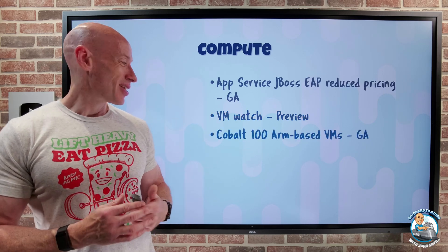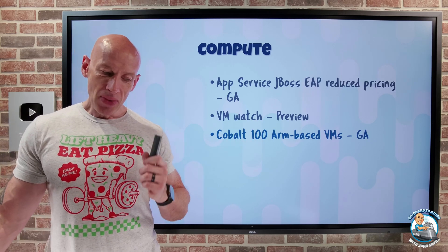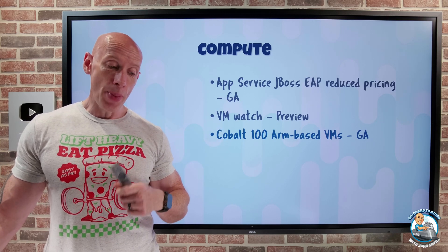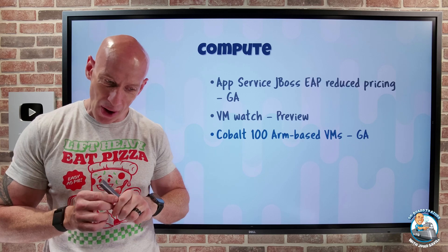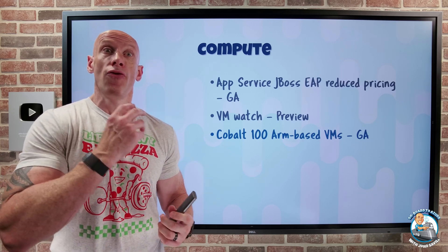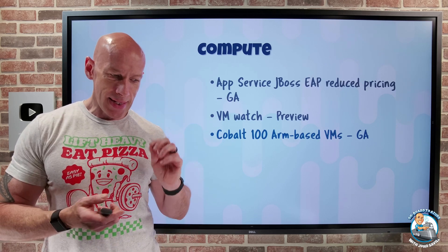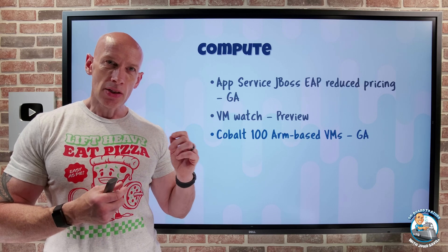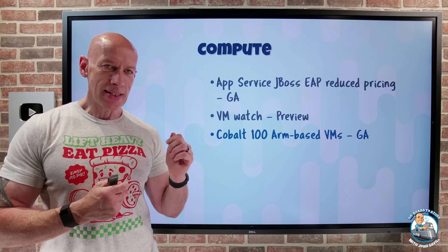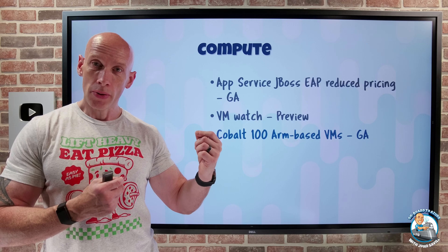This is a big one — Cobalt 100 ARM-based VMs have gone GA. The Cobalt 100 is Microsoft's first 64-bit ARM processor designed in-house, part of their custom silicon program, built specifically for use in the cloud. There are a number of different SKUs built on this: the DPSV6, which is a more generalized SKU with a 4-to-1 memory-to-CPU ratio, and the DPL SV6, which has a 2-to-1 memory-to-core ratio.